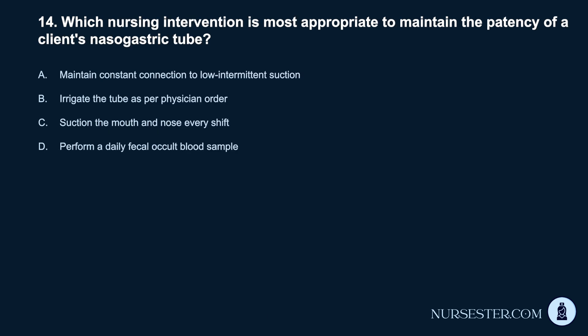Question 14. Which nursing intervention is most appropriate to maintain the patency of a client's nasogastric tube? A. Maintain constant connection to low intermittent suction. B. Irrigate the tube as per physician order. C. Suction the mouth and nose every shift. D. Perform a daily fecal occult blood sample.